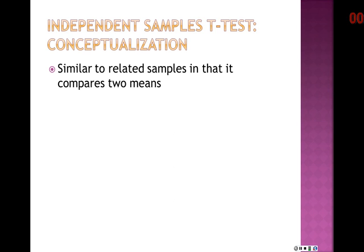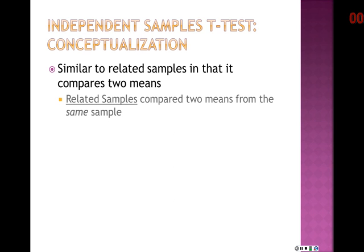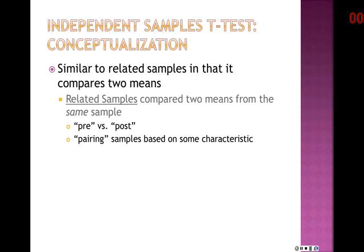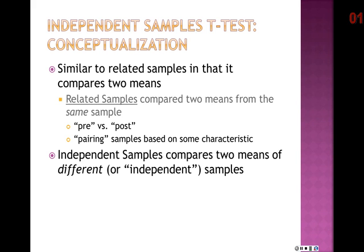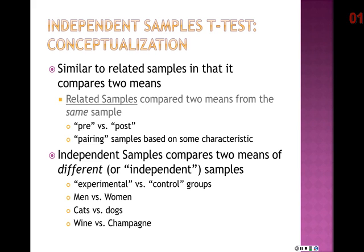Under what conditions do we use an independent samples t-test? It's very similar to the related samples t-test in that it compares two means. However, in the related samples t-test you compare two means from the same sample—for example, pre and post measurements or paired individuals. The independent samples t-test, on the other hand, compares two means from different or independent samples—experimental versus control groups, men versus women, dogs versus cats, wine versus champagne. It compares apples to oranges rather than apples to apples.